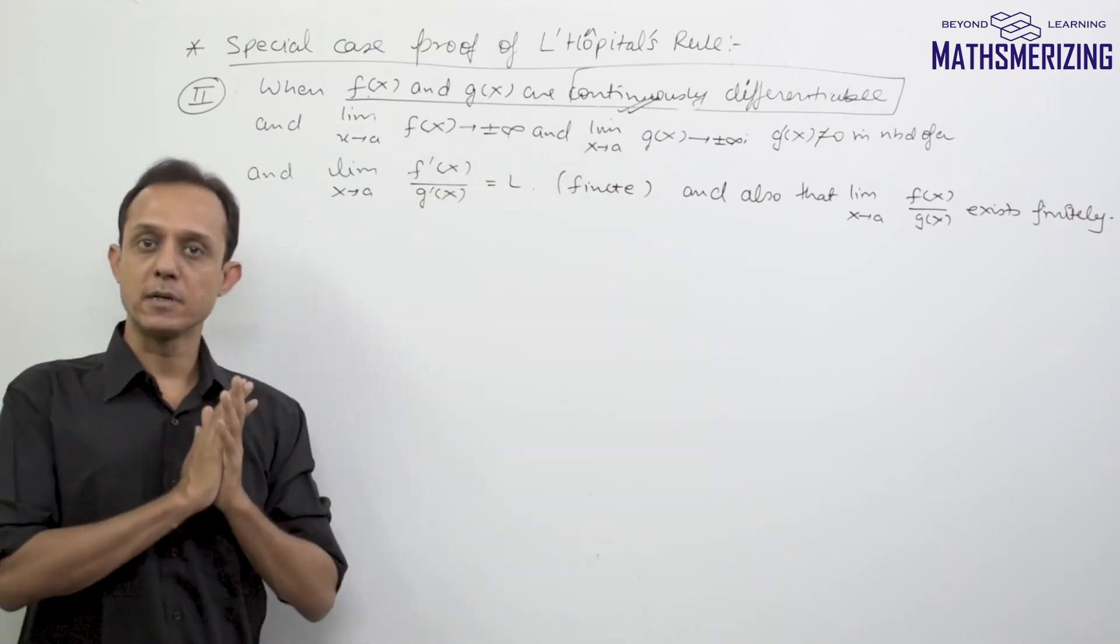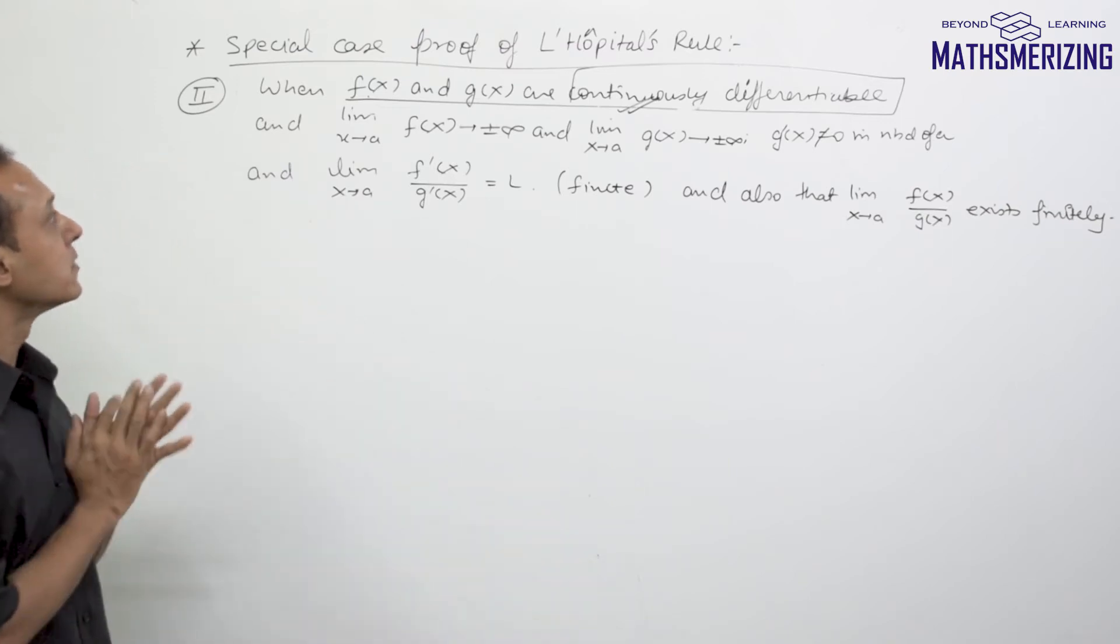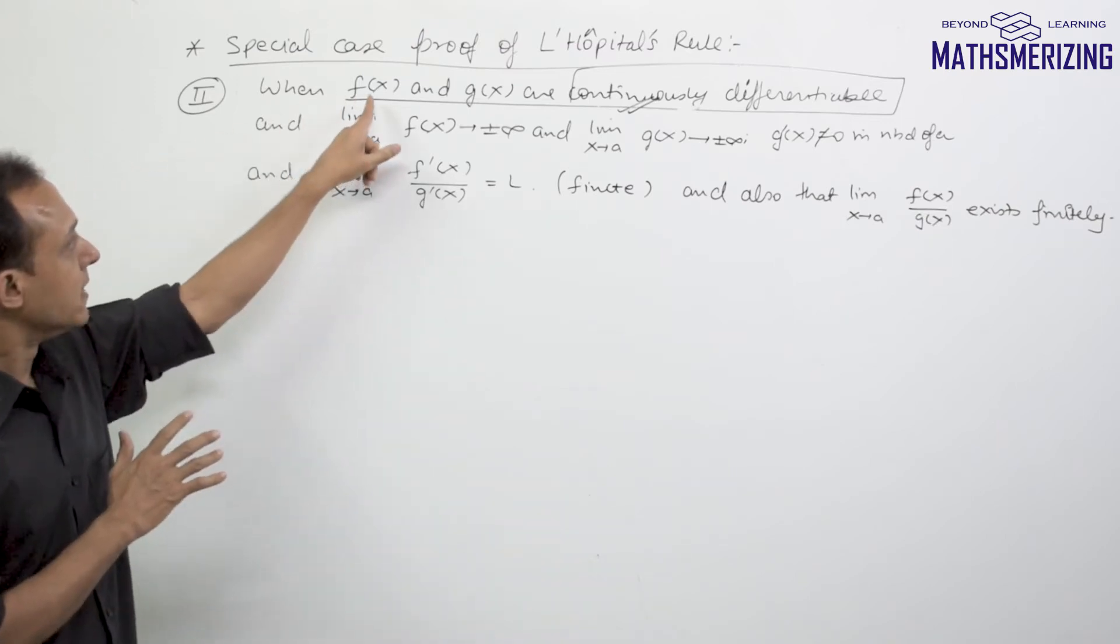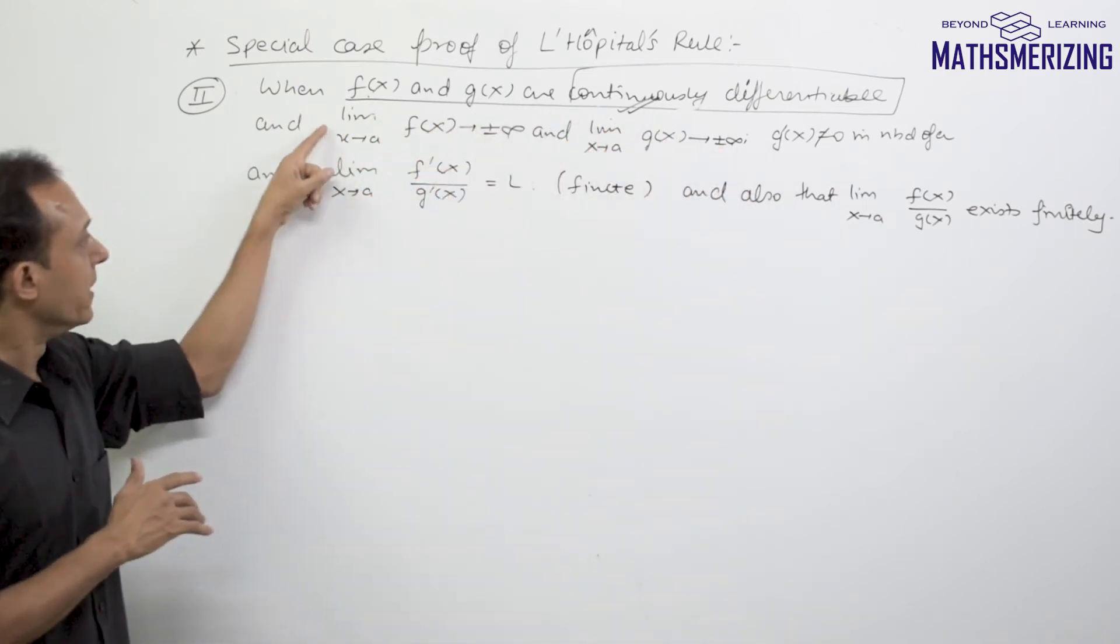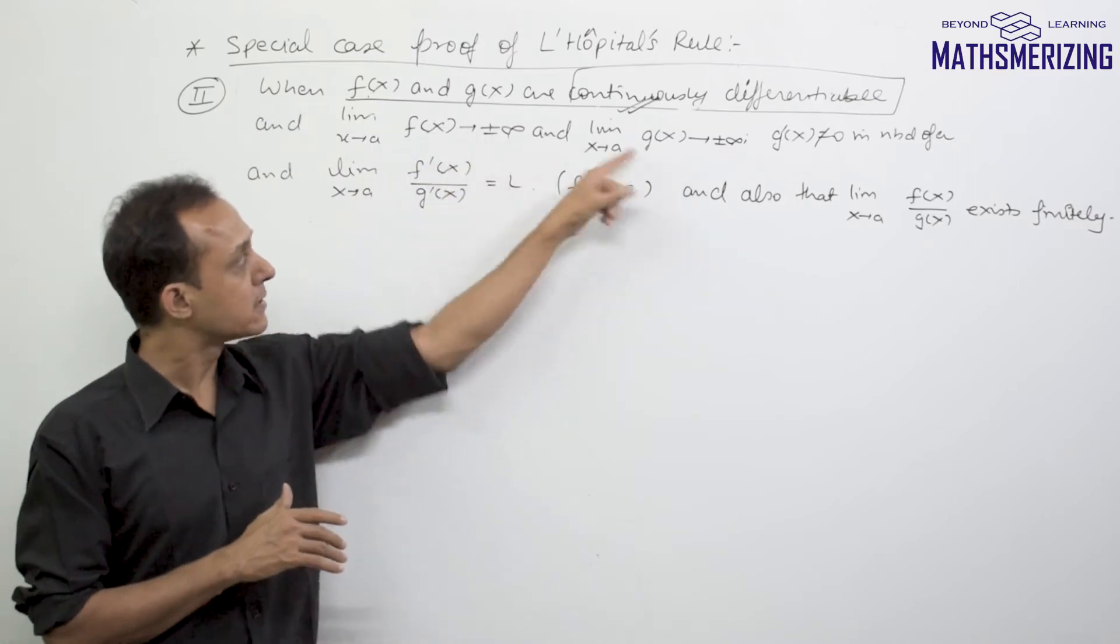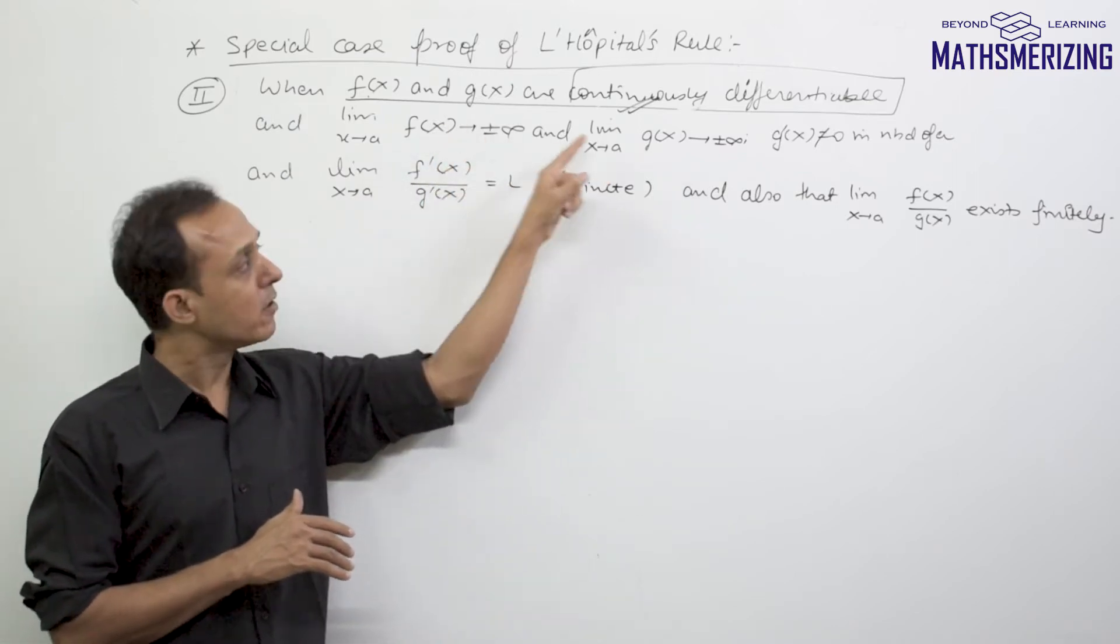Again, this proof is restrictive; we have made many assumptions. In this case, the assumptions that we are making is these functions f(x) and g(x) are continuously differentiable. Limit x tends to a of f(x) and g(x) tends to either plus infinity or minus infinity.